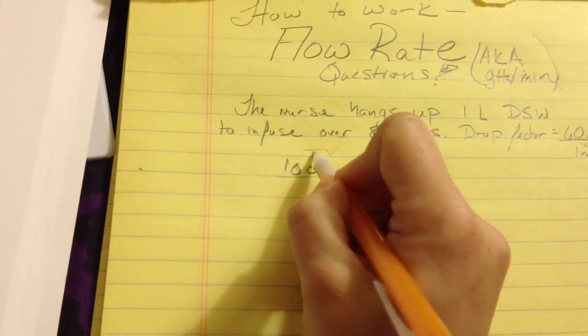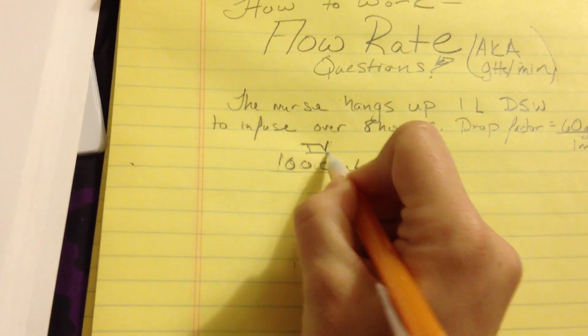So we're going to start with our total volume, which is 1,000, because 1 liter is equal to 1,000 milliliters. I'm going to make a little note of it right here, which is our total volume.